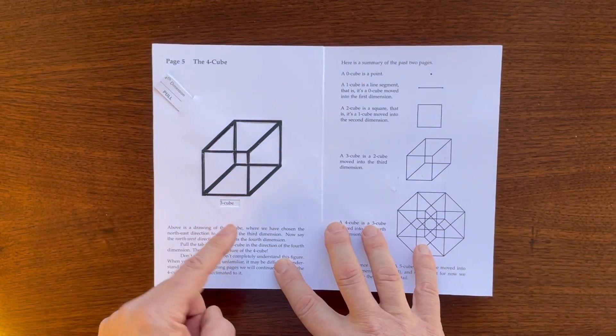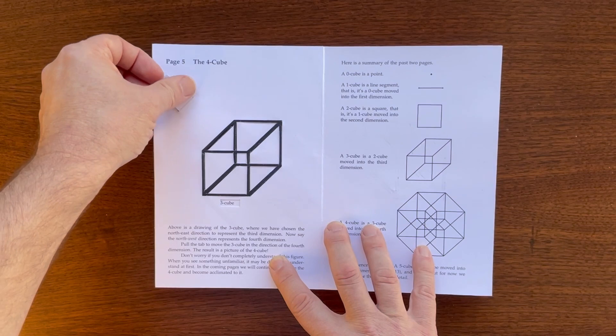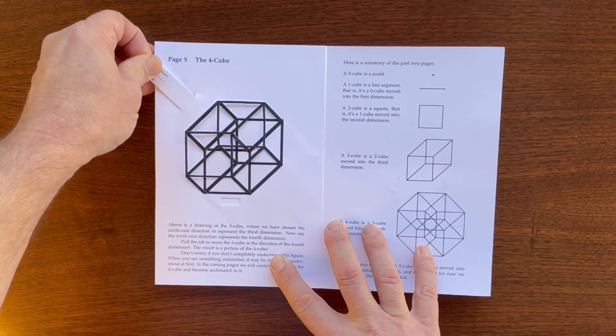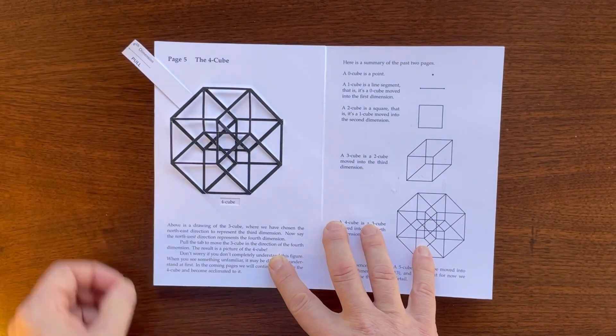Now, pull that three-dimensional cube into the fourth dimension to get a picture of a four-dimensional cube, or tesseract.